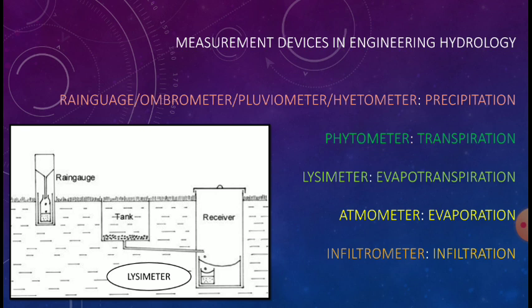Next one is phytometer. With the help of phytometer you will measure transpiration. With the help of lysimeter you will measure evapotranspiration. With the help of atmometer you can measure evaporation. Atmometer is also known as evaporometer. And infiltrometer is used to measure infiltration. Here in this picture you are seeing rain gauge and lysimeter.